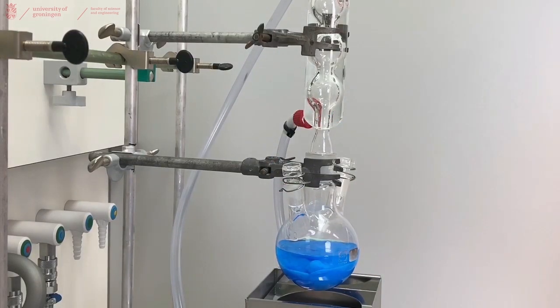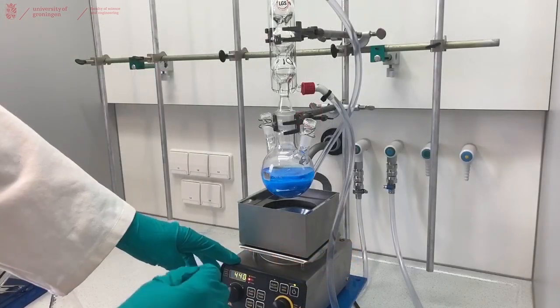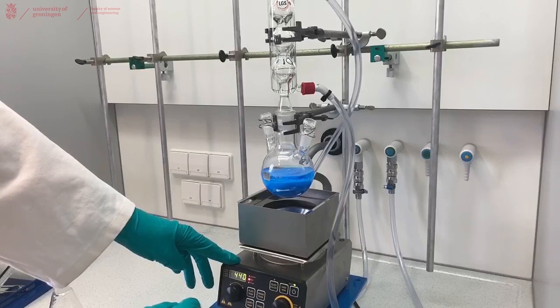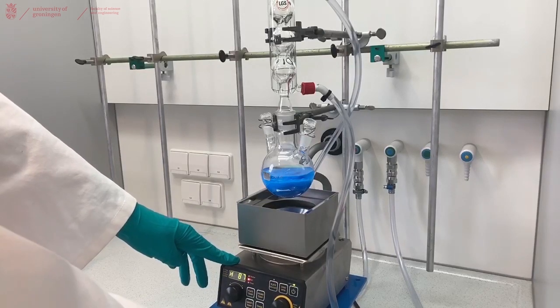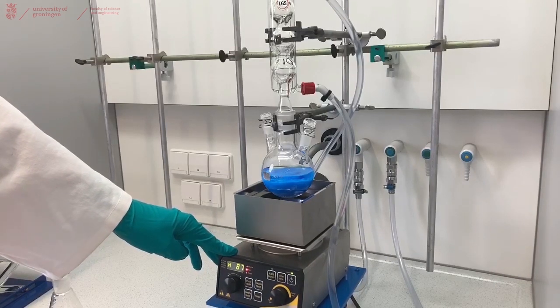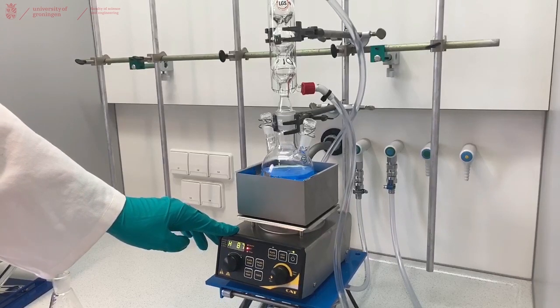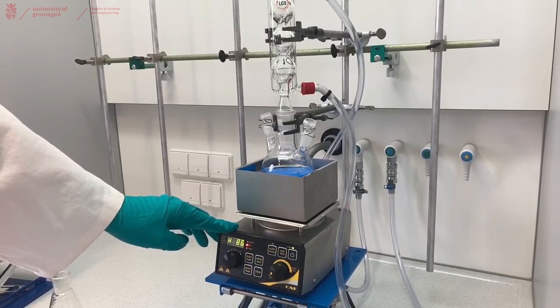Now we'll have to heat our solid and our liquid by turning on the IKA hotplate, setting it to a temperature higher than the boiling point of your solvent. So in this case with water, we put it above 100 degrees and rotate the lab jack up so it touches your flask.